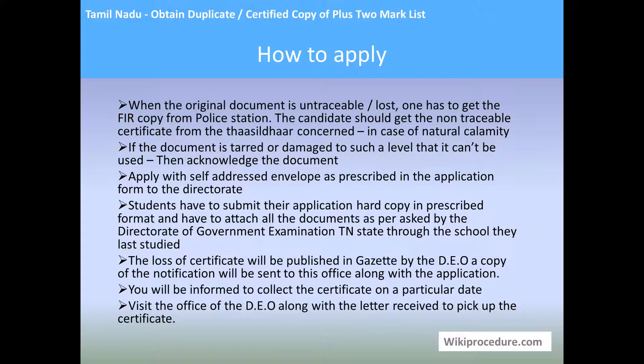How to apply: When the original document is untraceable or lost, one has to get the FIR copy from the police station. The candidate should get the non-traceable certificate from the tahasildar concerned. In case of natural calamity, if the document is damaged to a level that it can't be used, the document should be acknowledged. Apply with a self-addressed envelope as prescribed in the application form to the directorate. Students must submit their application in the prescribed format through the school where they last studied. The loss of certificate will be published in the gazette by the DEO, and you will be informed to collect the certificate on a particular date.